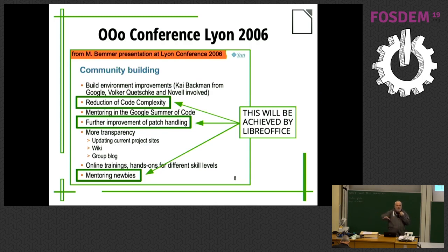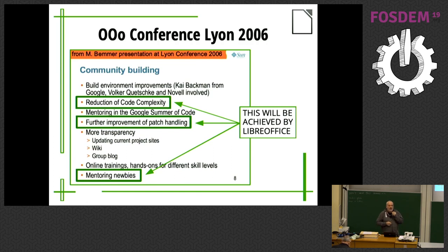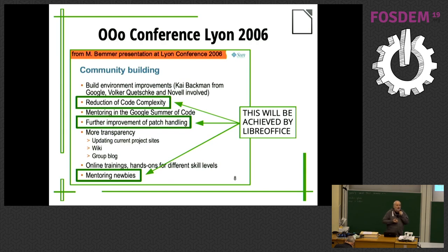That developer, Kohei Yoshida, is still a LibreOffice contributor. The last issue was mentoring newcomers — the OpenOffice code is rather complex, and just as complex today as well. If you want new contributors, you have to mentor them to get into the code. This is what we are still trying to do.